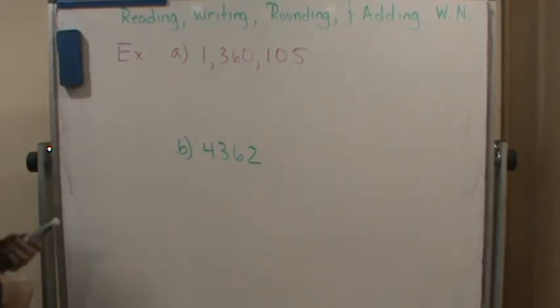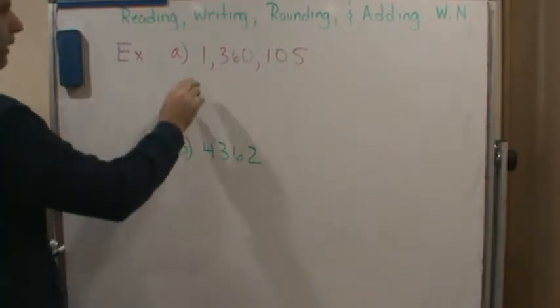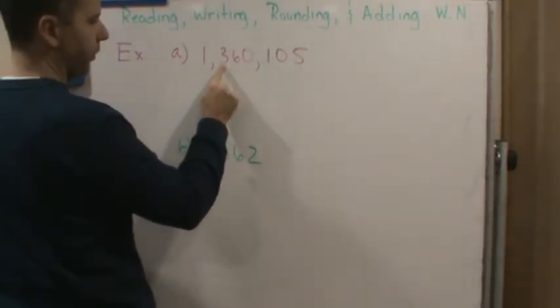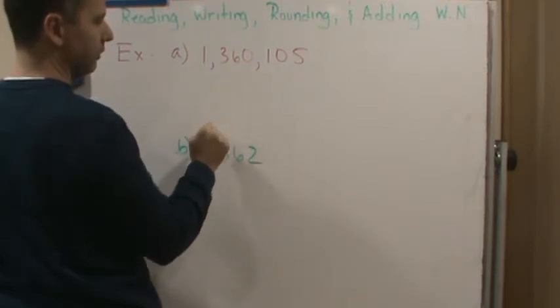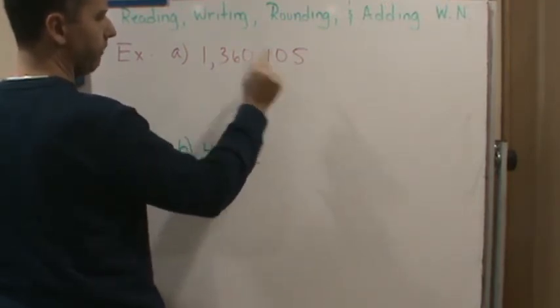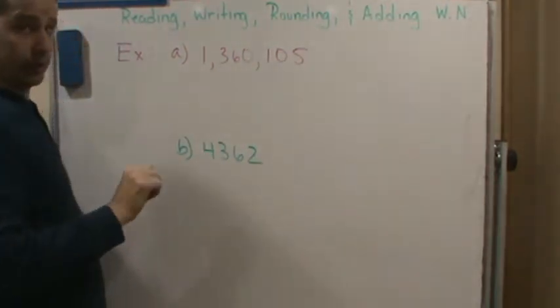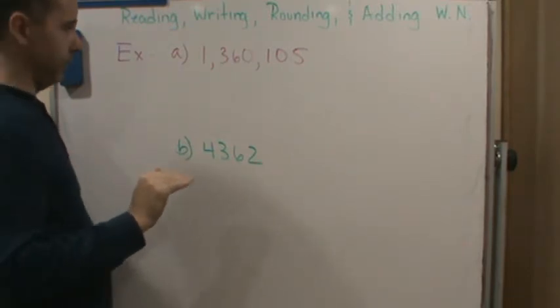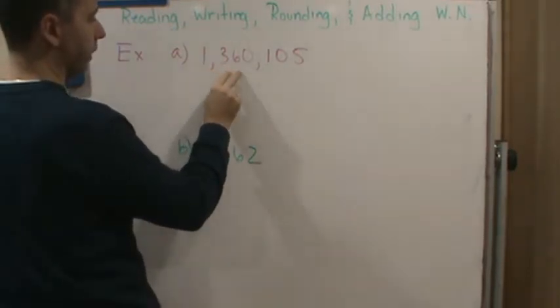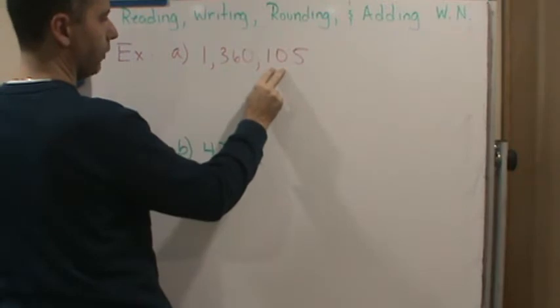Okay, so let's do it. So this one here is one million three hundred sixty thousand, right, one hundred five. Right here, I didn't use any word, and so one million three hundred sixty thousand one hundred five.